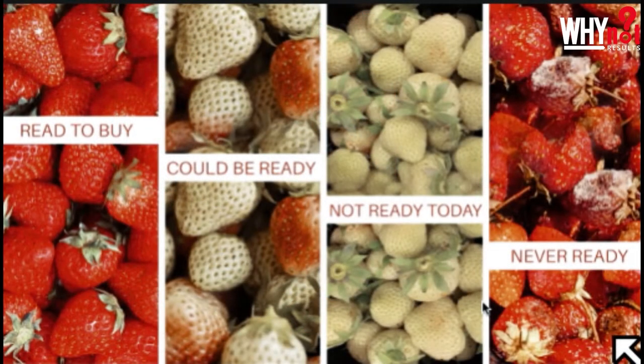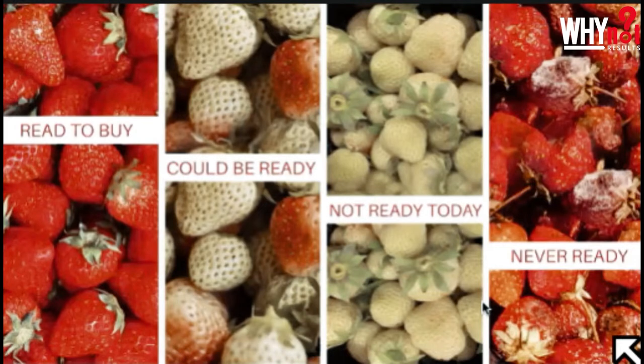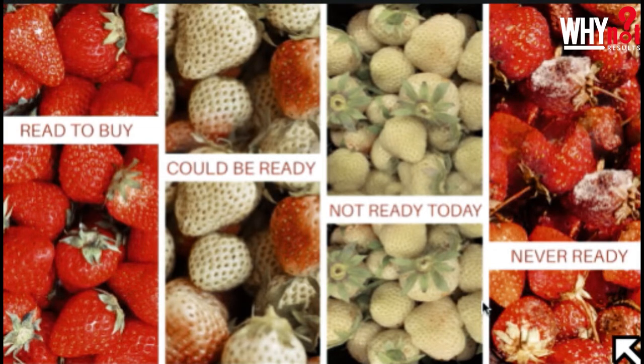I think it's something more like this: you have some that are ready to buy now — that's who you're already closing. Then you have some that could be ready; they just need maybe another couple of touches, a little more education, a little more value. Then you have some that are just not ready — they need a little more time on the vine. And then you have a portion that will never be ready; there are bad leads out there — they're just moldy strawberries.